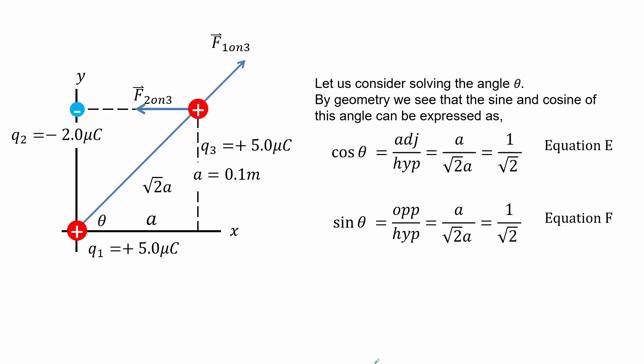Let us consider solving the angle theta. By geometry we see that the sine and cosine of this angle can be expressed as these functions here. Consider the adjacent and hypotenuse parts. For the cosine function we have Equation E and sine function as shown in Equation F. We will substitute them later.